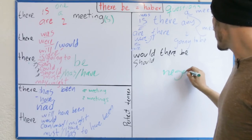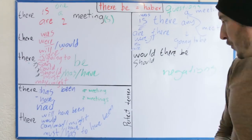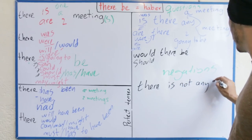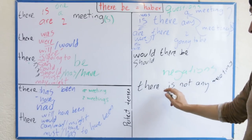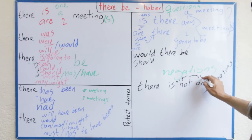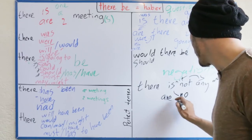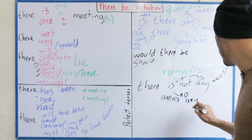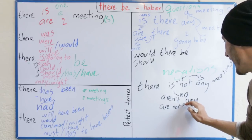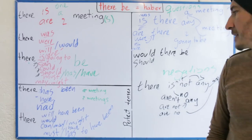Para las negaciones, puedo decir: there is not any meeting. O en contracción: there isn't any meeting. O simplemente: there is no meeting. En plural, no hay reuniones: there aren't any meetings, o there are not any meetings, o there are no meetings.